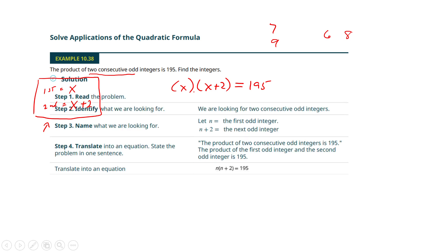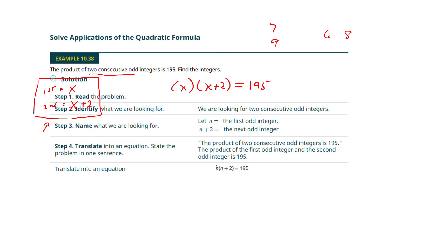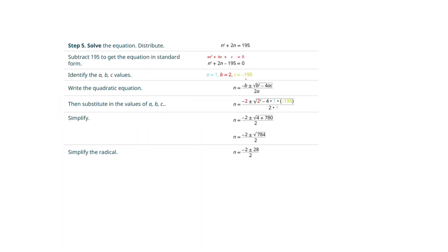Now let's see how they did here. They called it n, and they're distributing this. We'd get n squared plus 2n equals 195. Now here's where this is relevant to this section — how do we solve it? It's got a square in it. We're going to pull the 195 to the other side, and I don't think there's any way to factor this, so we're going to use the quadratic formula.